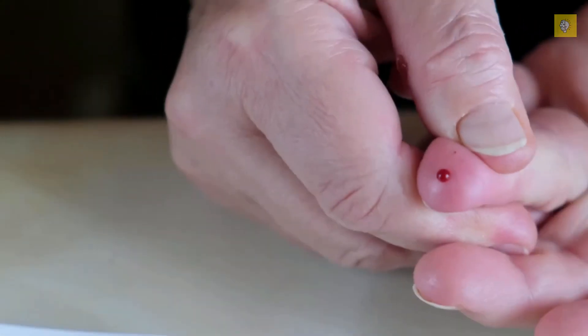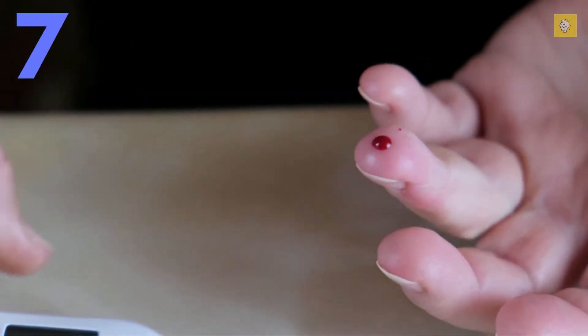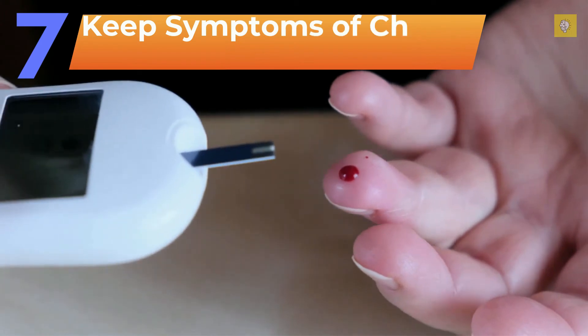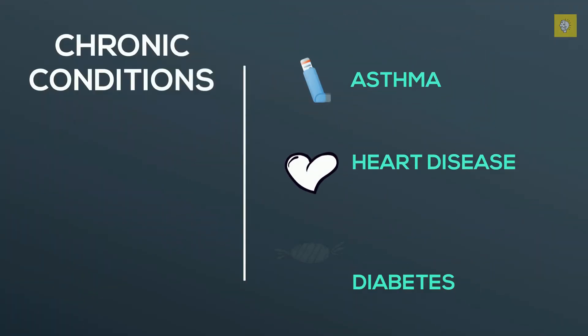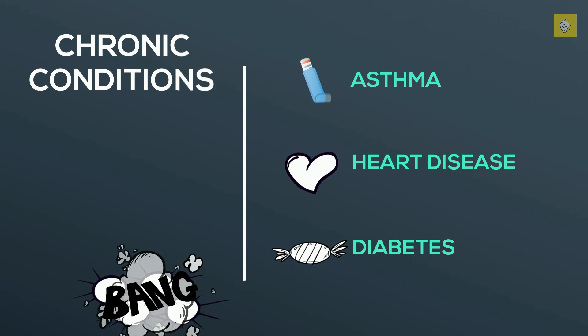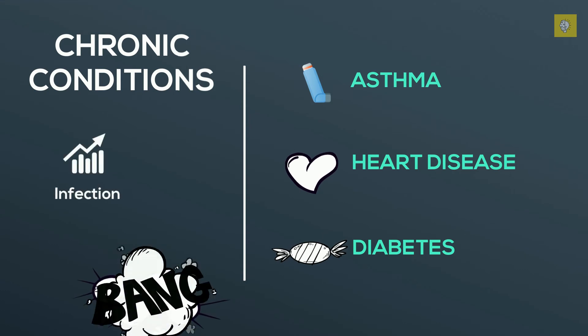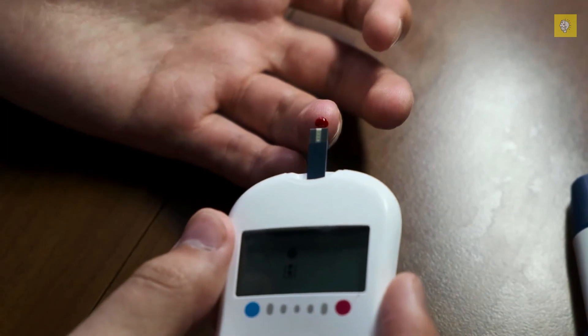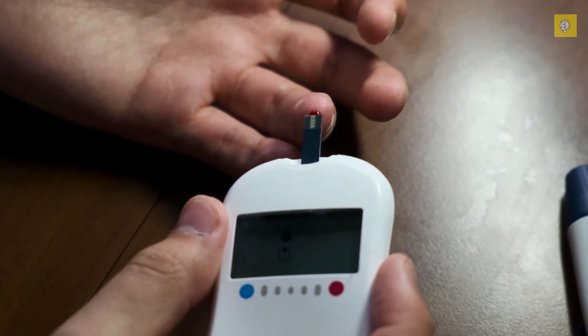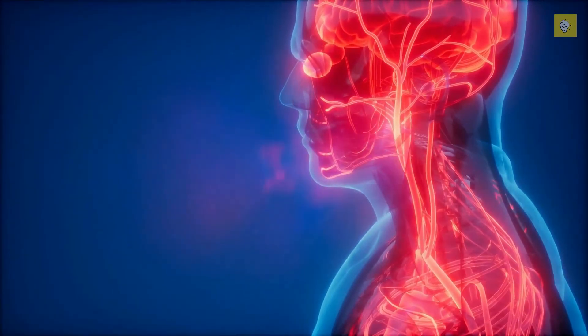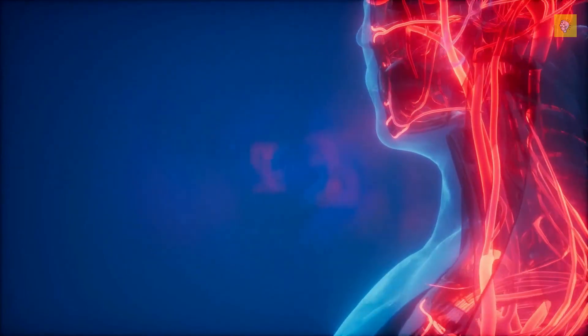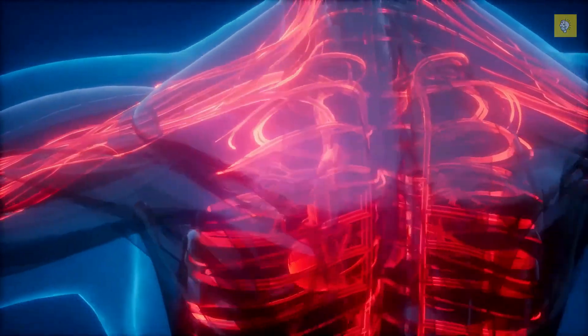Number seven: Keep symptoms of chronic conditions under control. Chronic conditions like asthma, heart disease and diabetes can affect the immune system and increase the risk of infections. For example, when people with type 2 diabetes don't manage their blood sugar properly, this can create a chronic low-grade inflammatory response that weakens the body's defense system.